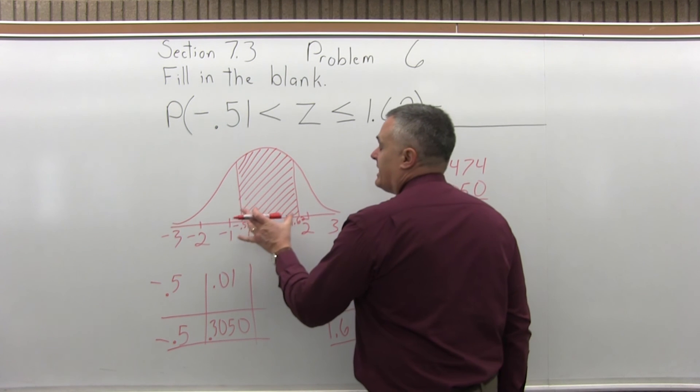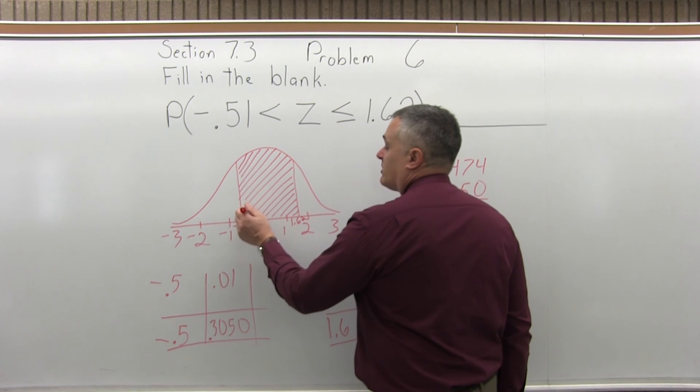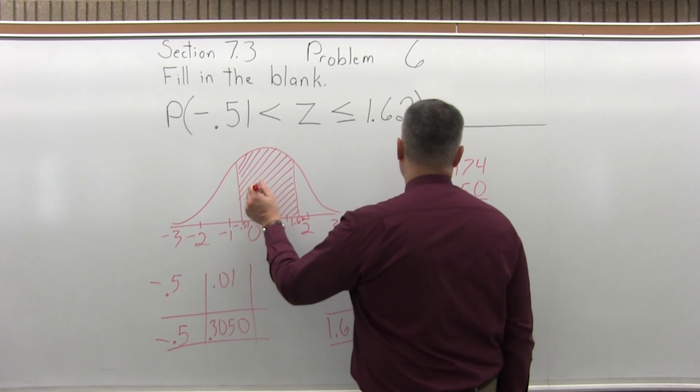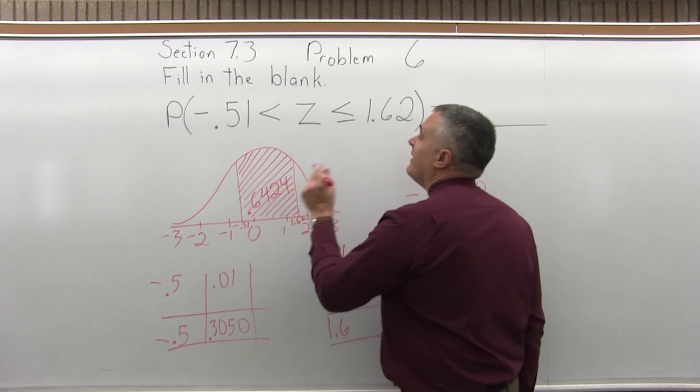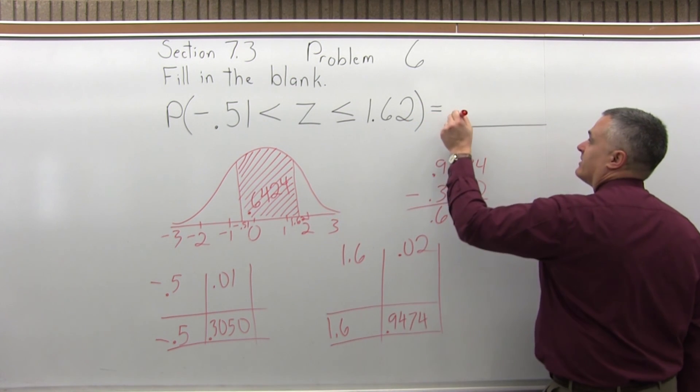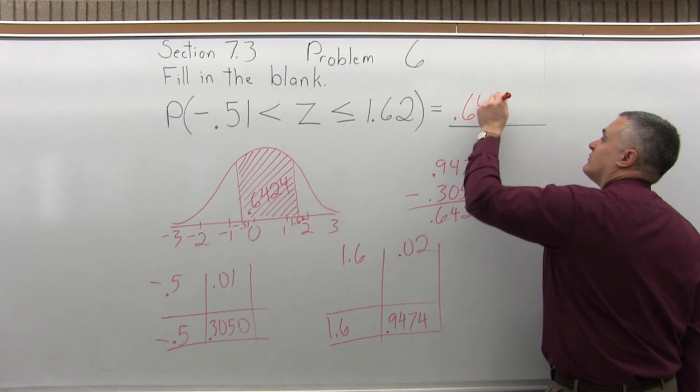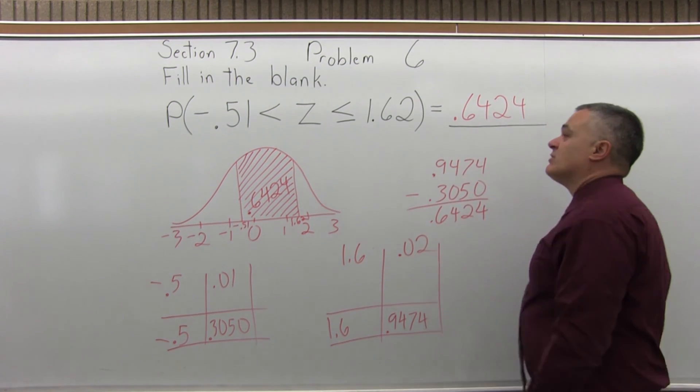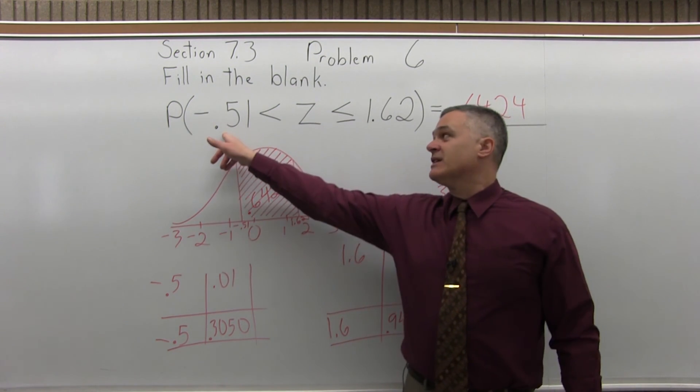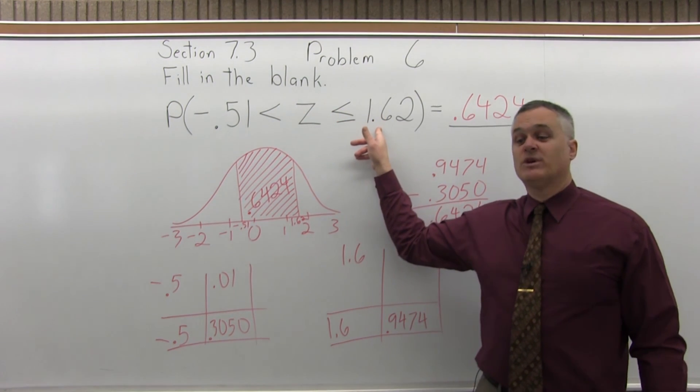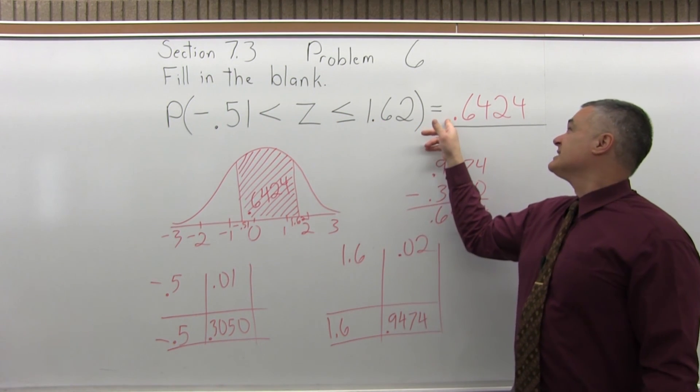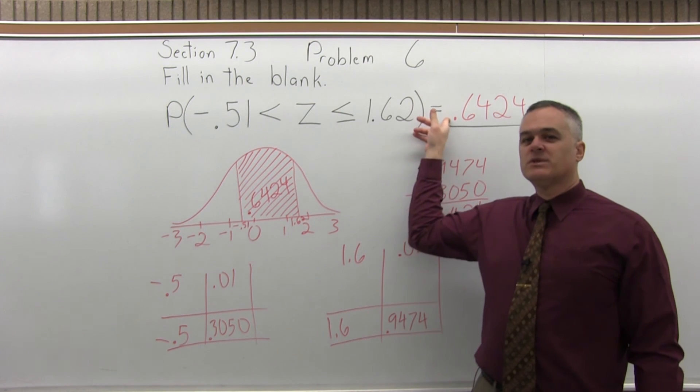So the area between -0.51 and positive 1.62 is 0.6424. That's what we fill the blank in with, 0.6424. So the probability that Z is between -0.51 and positive 1.62 is approximately a 64.25% probability.